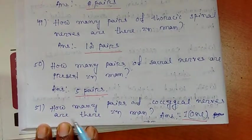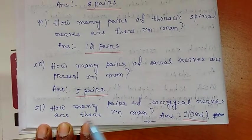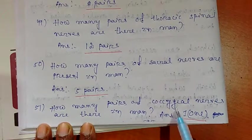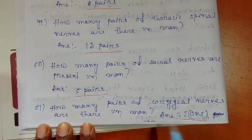Question number 51: How many pairs of coccygeal nerves are there in man? Answer: 1.